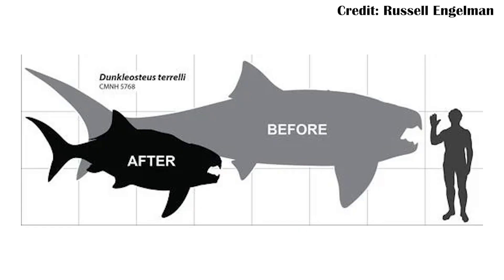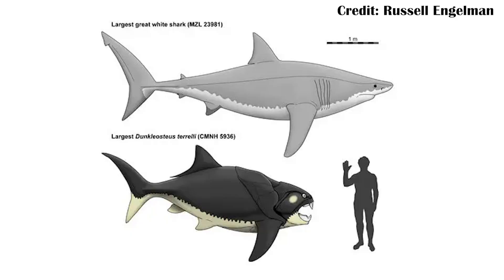However, last year there was a paper that suggested it probably wasn't 30 feet long — it was probably closer to 12 feet long. So instead of 10 meters, it was probably closer to something like 3 or 4 meters. This made some fans of paleontology a little bit upset, but I will just say a 12-foot-long fish is still a monster fish.